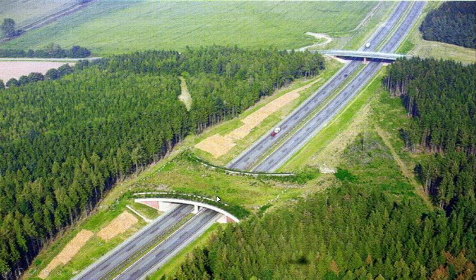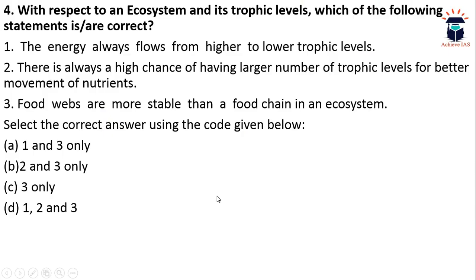The next question: with respect to an ecosystem and its trophic levels, which statements are correct? First, energy always flows from higher to lower trophic level. Second, there is always a high chance of having a larger number of trophic levels for better movement of nutrients. Third, food webs are more stable than food chains in an ecosystem. The first statement is clearly incorrect because energy always flows from lower to higher trophic level.